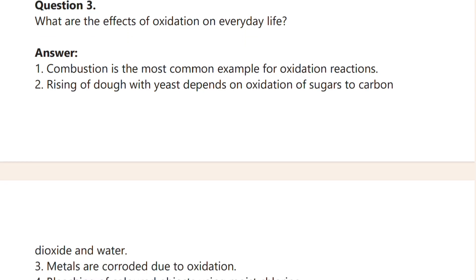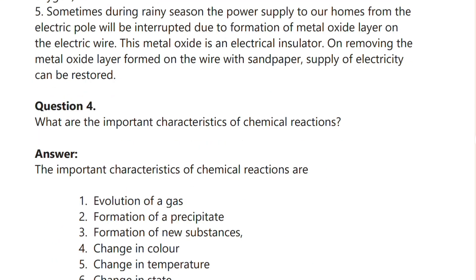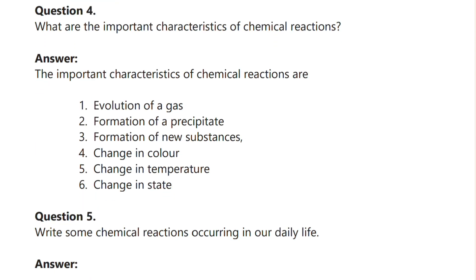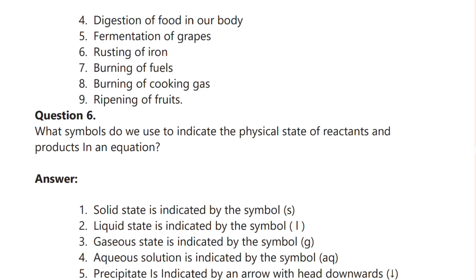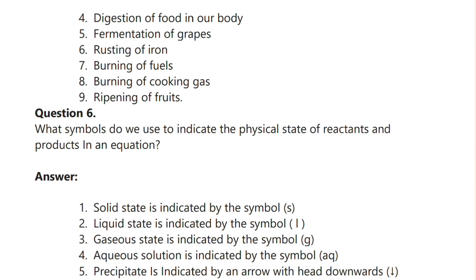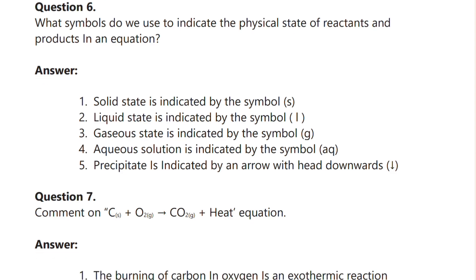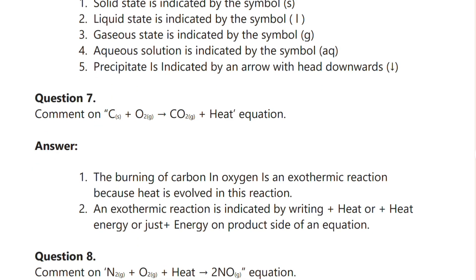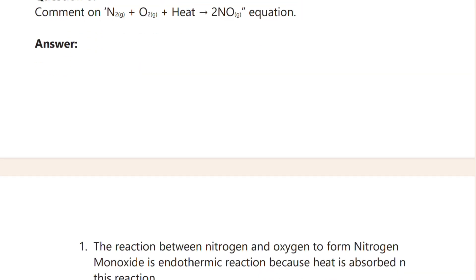Question number three covers combustion as the most common experience for oxidation. Then question number four, and question number five asks you to write some chemical reactions occurring in daily life — like souring of milk, formation of curd from milk, and cooking of food. These are easy to remember. Question number six asks: what symbol do you use to indicate the physical state of a reactant or product? Question number seven covers some chemical reaction equations.